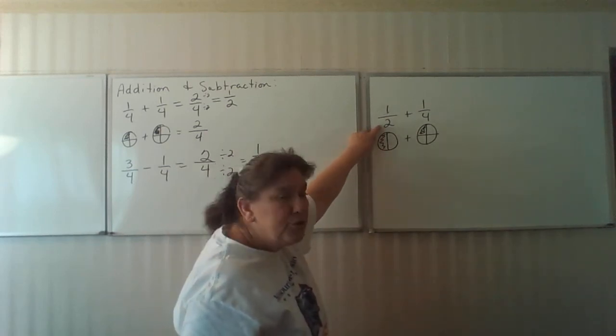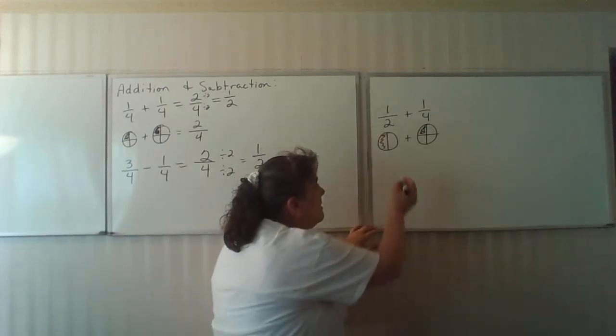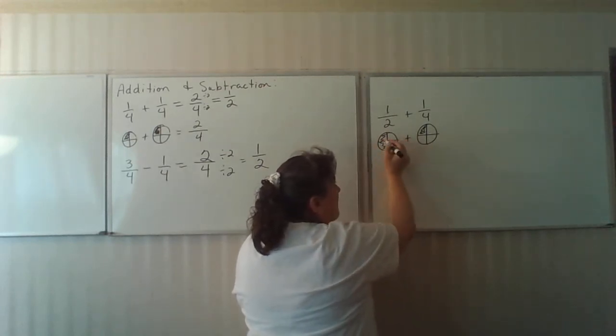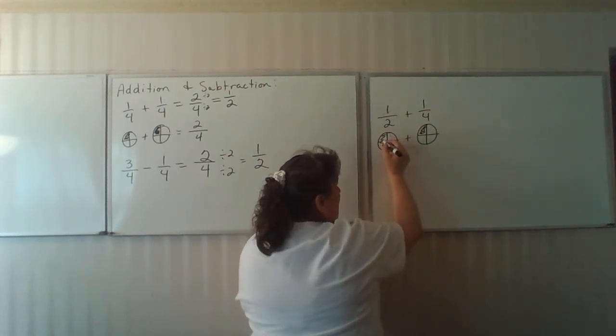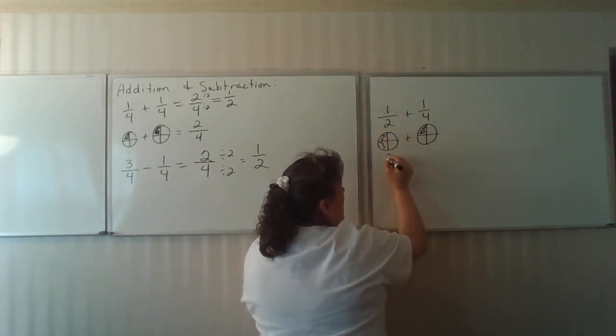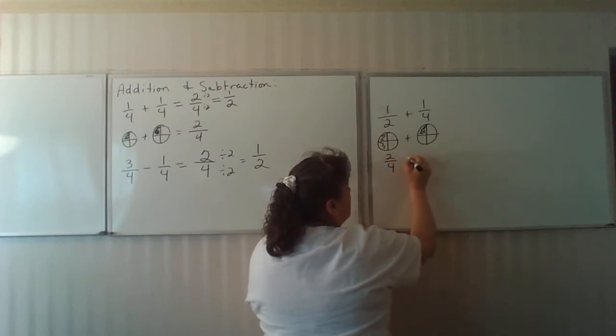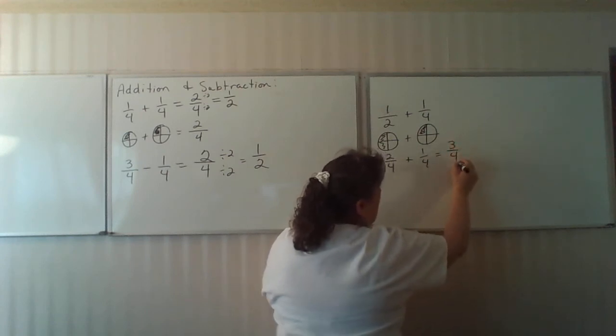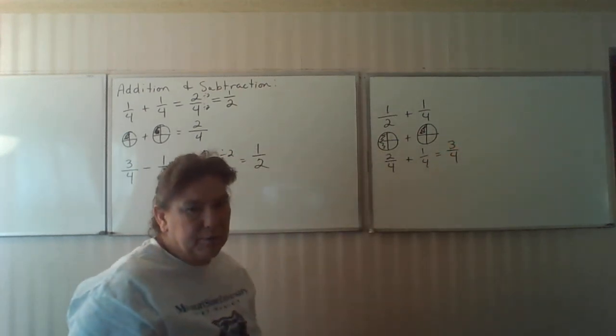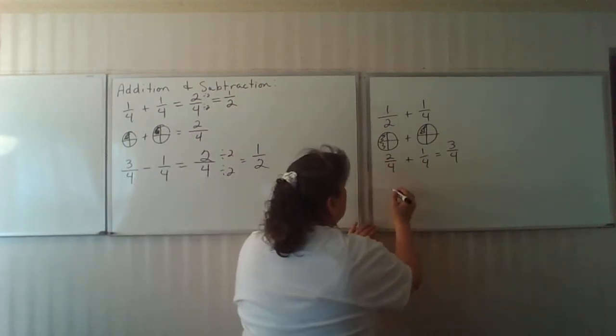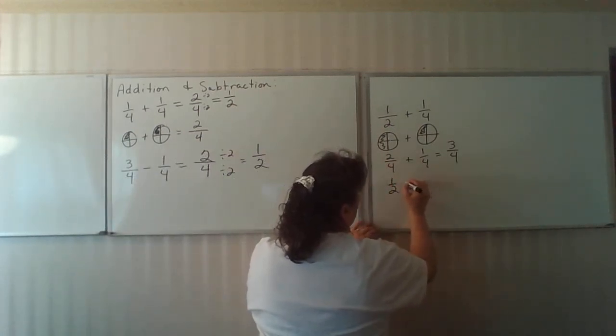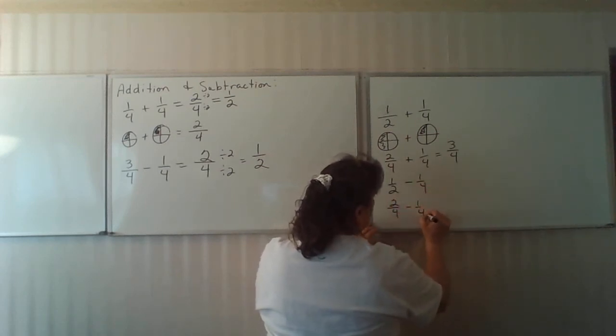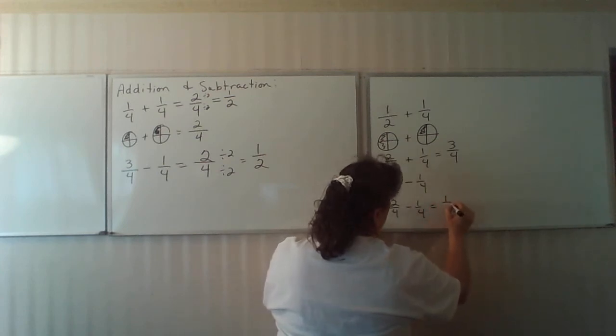So before we can add fractions or subtract fractions that do not have the same number of pieces in a whole, we have to get them to the same number of pieces. Now in this case, two will go into four. So I can take this, simply divide it again, and make those halves into fours. So now this is how many fourths. That one half became two fourths plus one fourth. And now since my denominator is the same, I can add them, and I end up with three fourths.